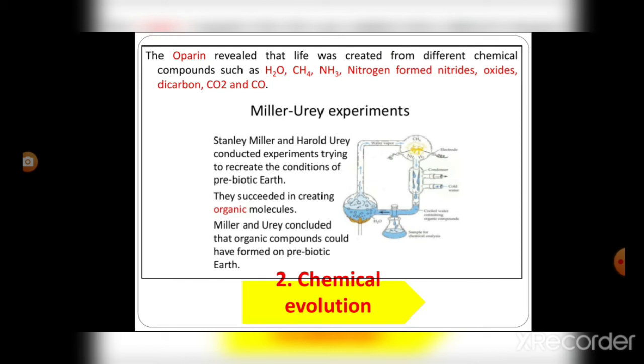Afterwards, Miller and Urey did one experiment and proved chemical evolution. Stanley Miller and Harold Urey conducted experiments trying to recreate the conditions of the prebiotic Earth. They succeeded in creating organic molecules. Miller and Urey concluded that organic compounds could have formed on prebiotic Earth.